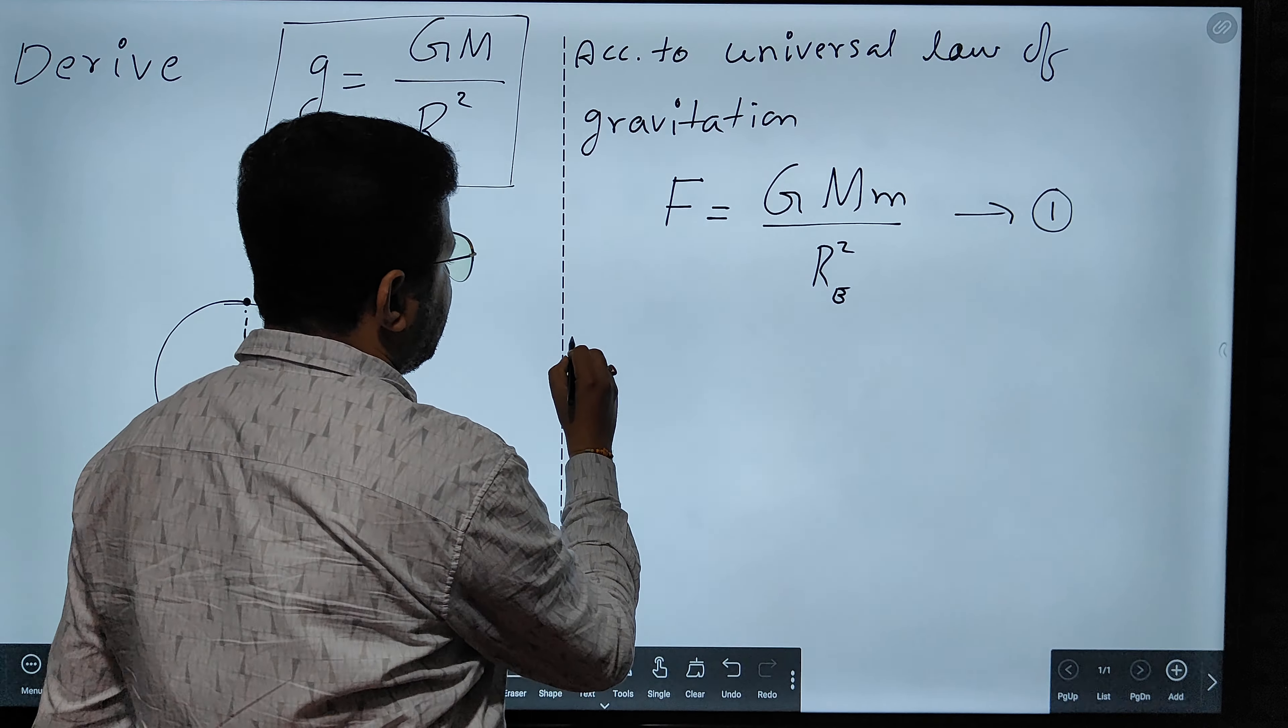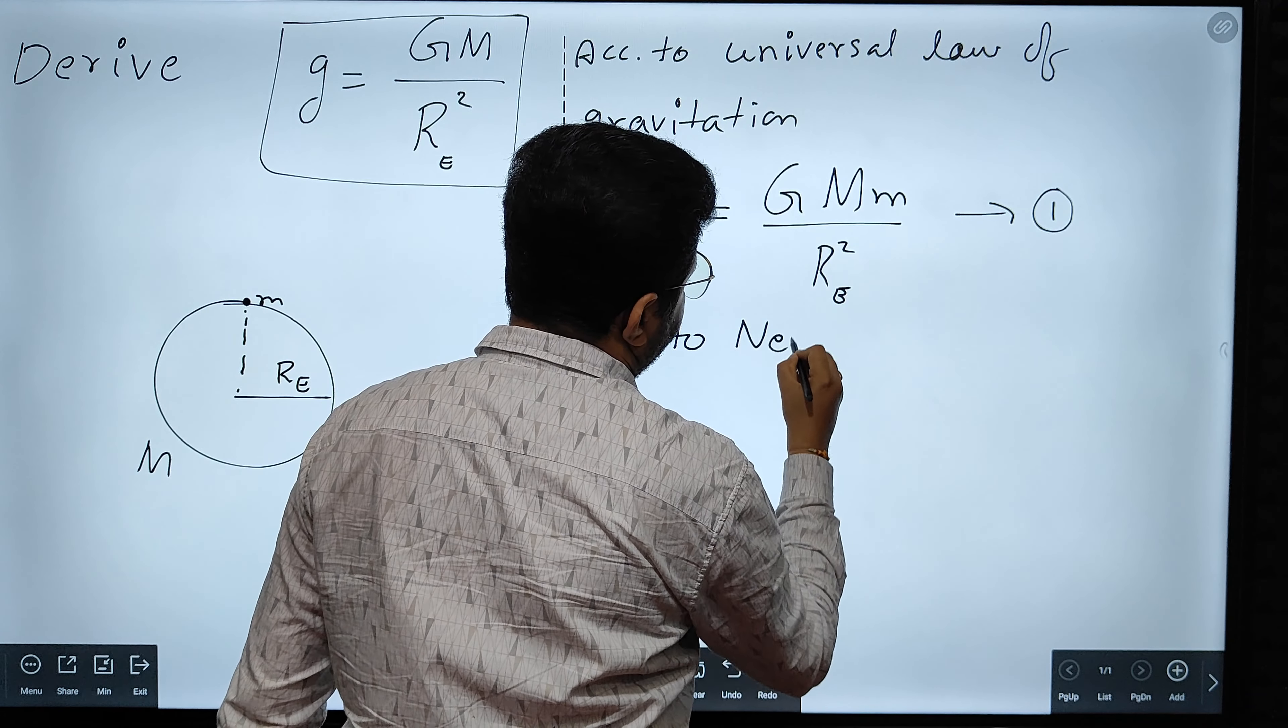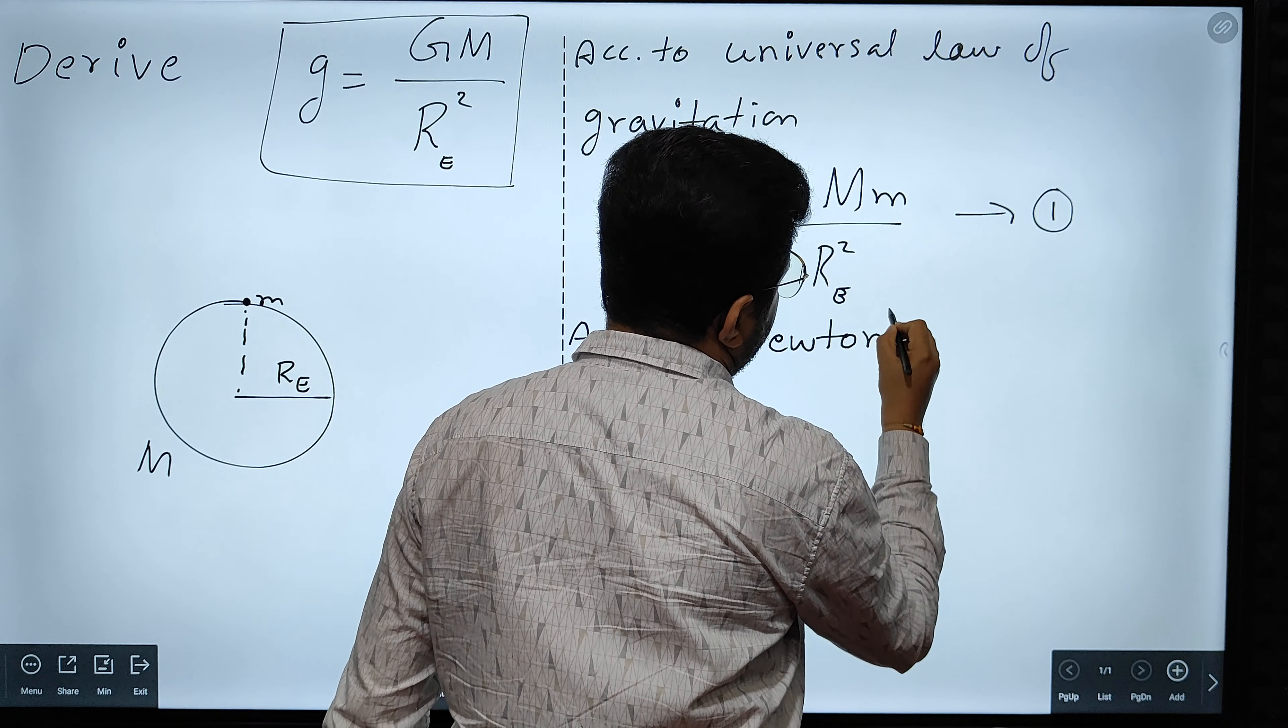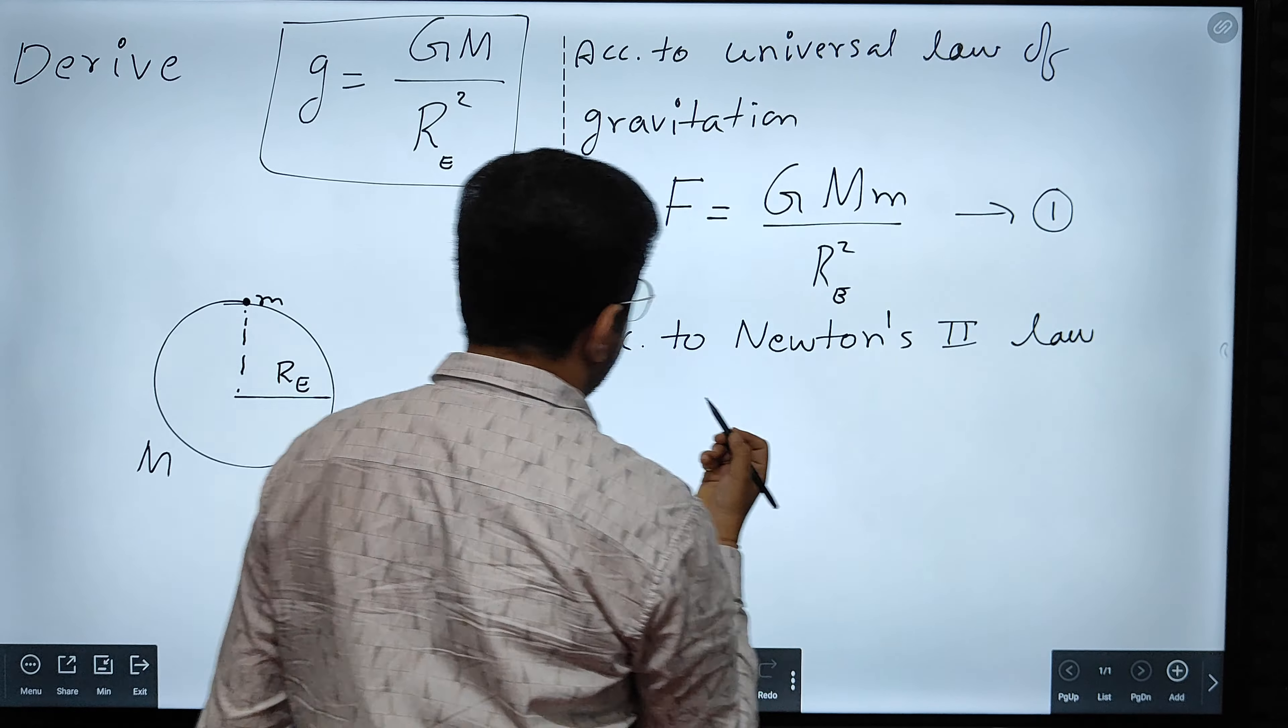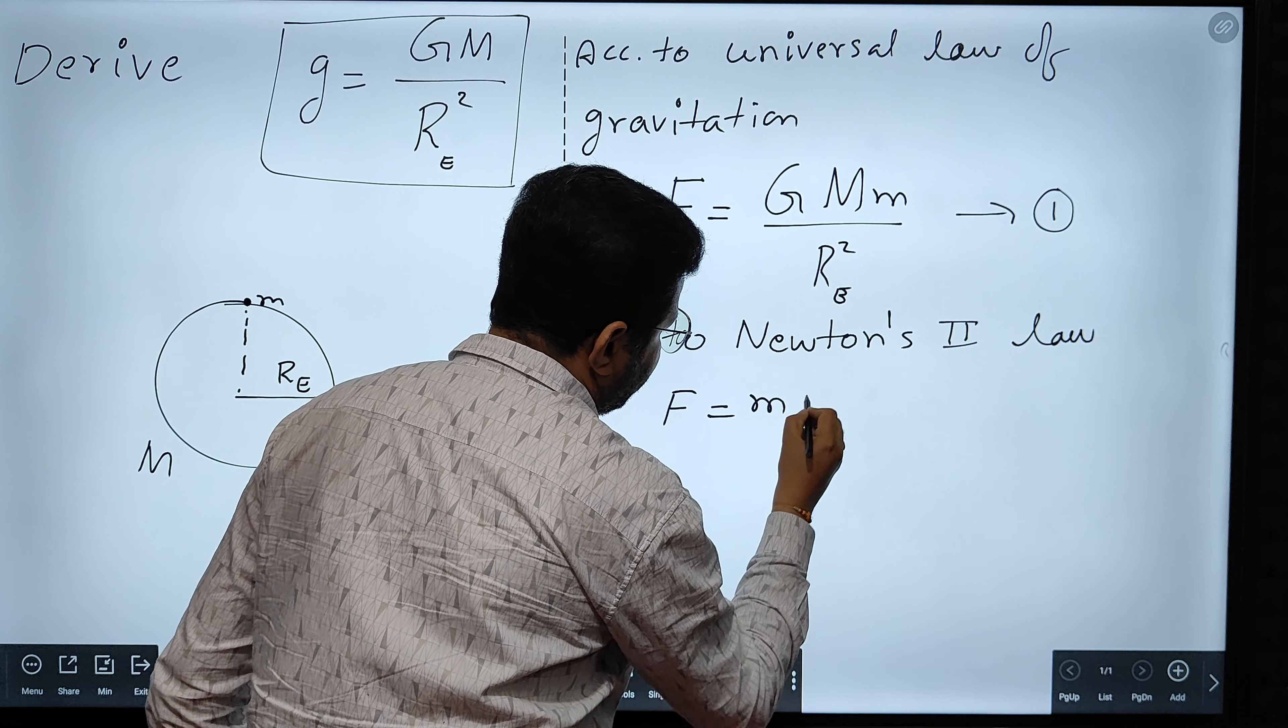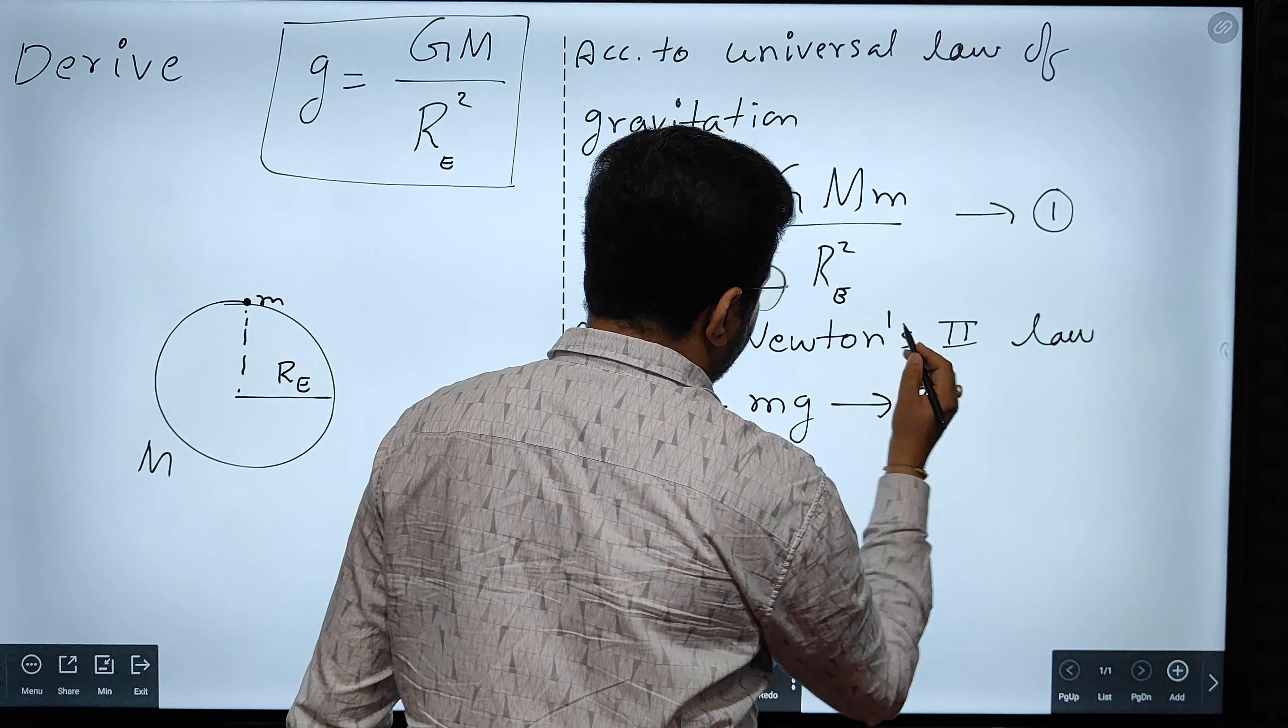And according to Newton's second law, F is equal to ma. According to Newton's second law, we know that force is equal to its weight. Weight is equal to m into g. This is my equation number two.